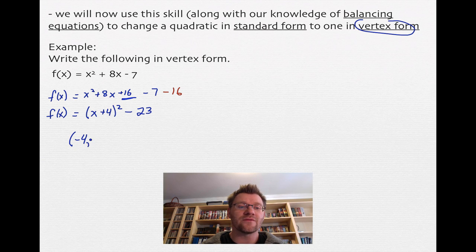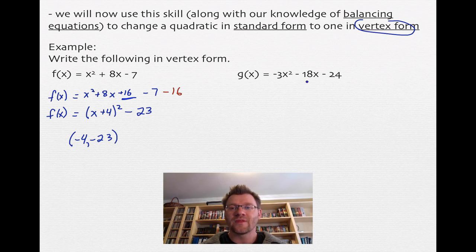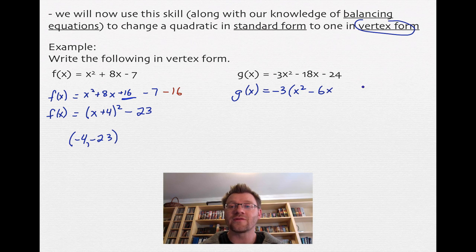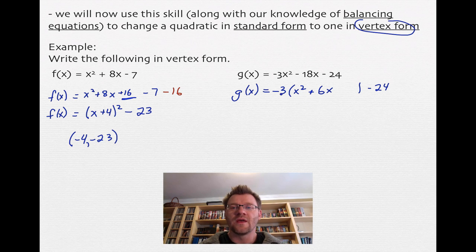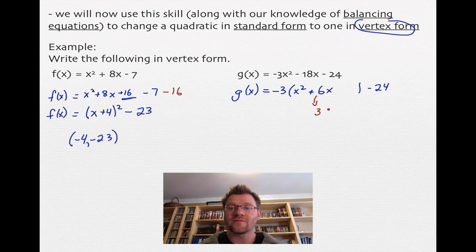So my vertex is at negative 4, negative 23. This is an important skill — when given a quadratic in standard form, you need to convert it. Second example: I have negative 3 in front of my x squared. I can't use the same process directly because to make a trinomial square I need a coefficient of 1. So I'll factor out negative 3 from the first two terms only. That means inside the brackets I get x squared plus 6x. I take half of 6 to get 3, and square it to get 9.